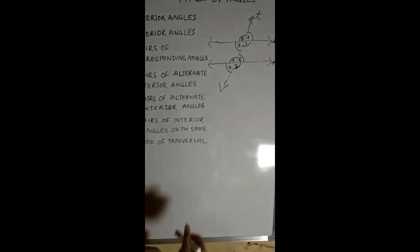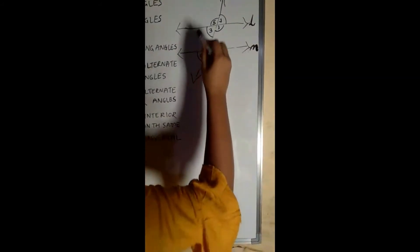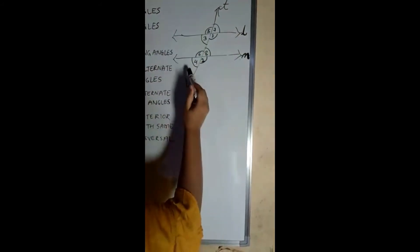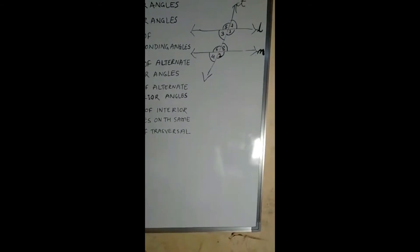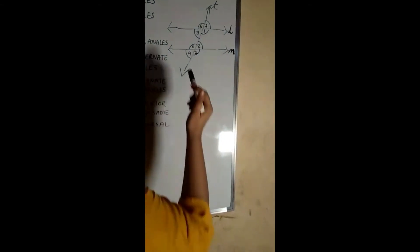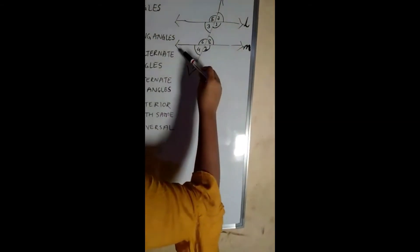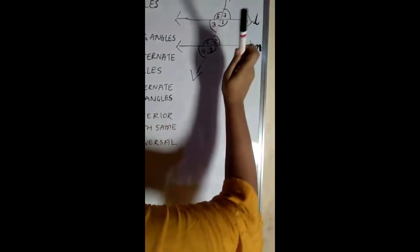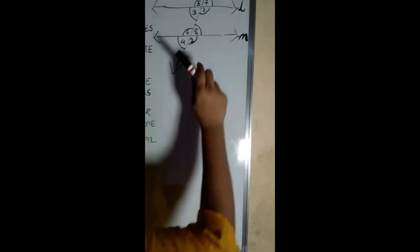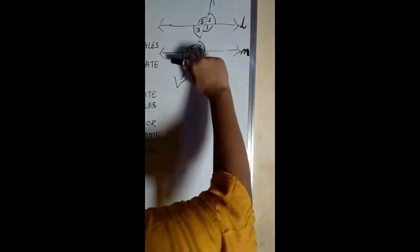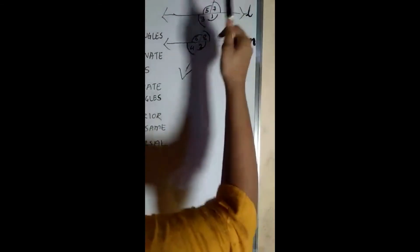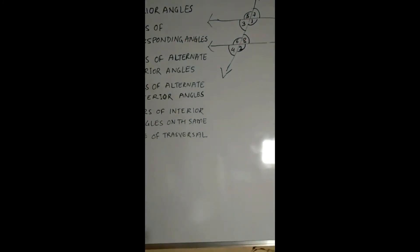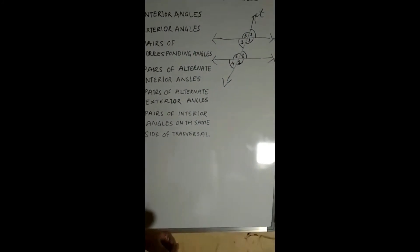Now let us study about pairs of alternate exterior angles. We know that 5, 7, 4, and 2 are exterior angles. In this figure, the alternate exterior angles are 4 and 7, and 5 and 2, which are vertically opposite. These are called alternate exterior angles.